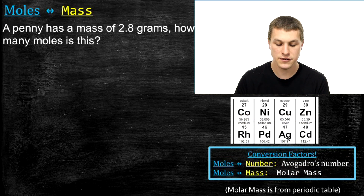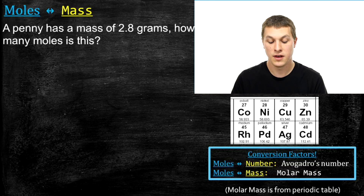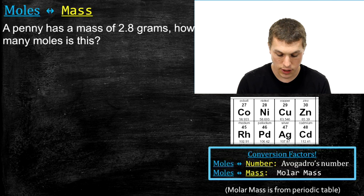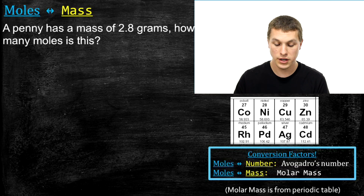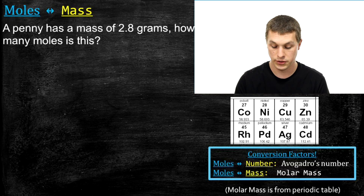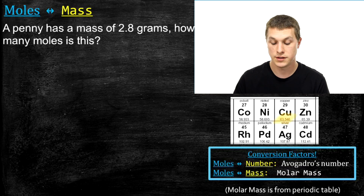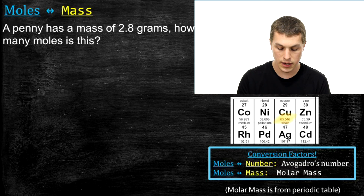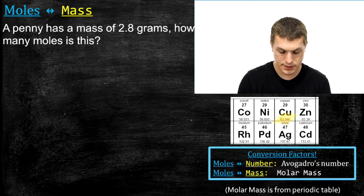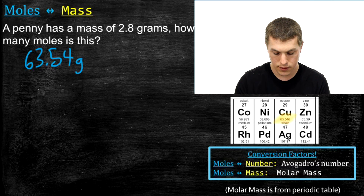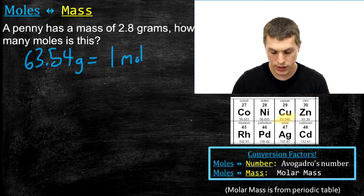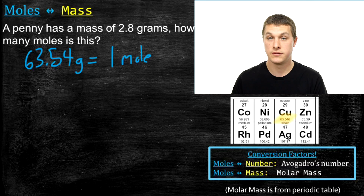Let's do this problem. A penny has a mass of 2.8 grams — how many moles is that? We're going to start with grams and go to moles, so we need to write our equality. The equality comes from copper, because pennies are made out of copper, and its molar mass is 63.546 grams per mole. So I can write that equality as: 63.54 grams equals one mole. If there are 63.54 grams of copper, I know I have a mole of it.